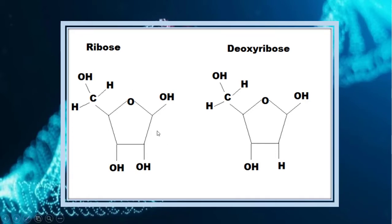This one is ribose sugar and this is deoxyribose sugar. You can see that in the structure of DNA, there is an oxygen present in ribose which is absent in deoxyribose. So deoxyribose means that one oxygen is removed — that is the key structural difference between these two sugars.